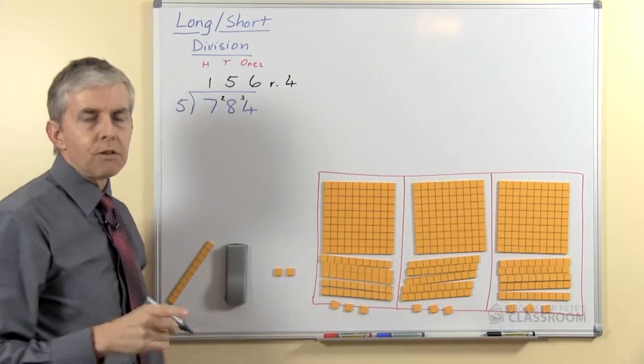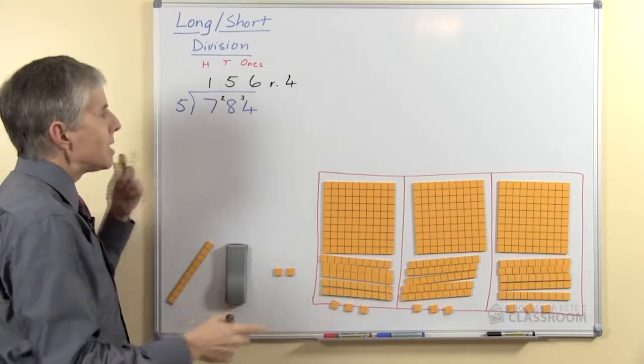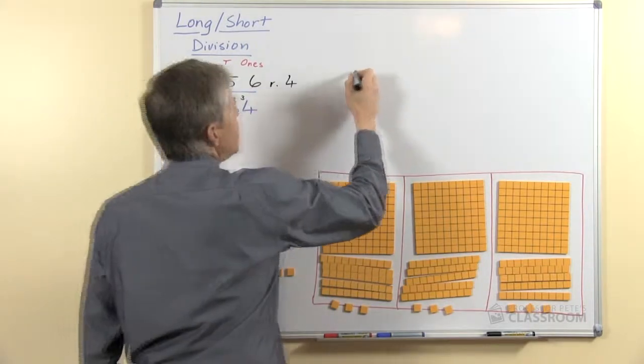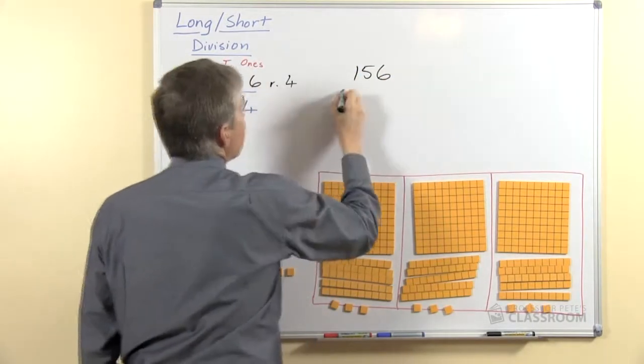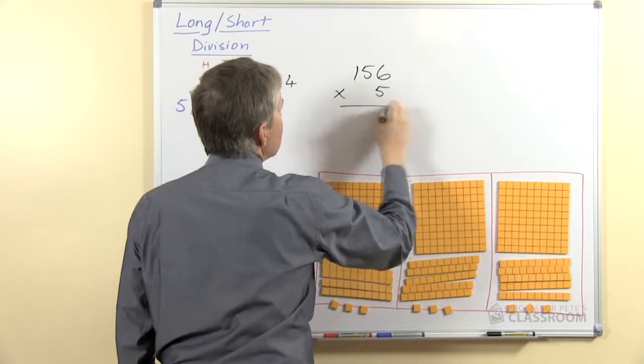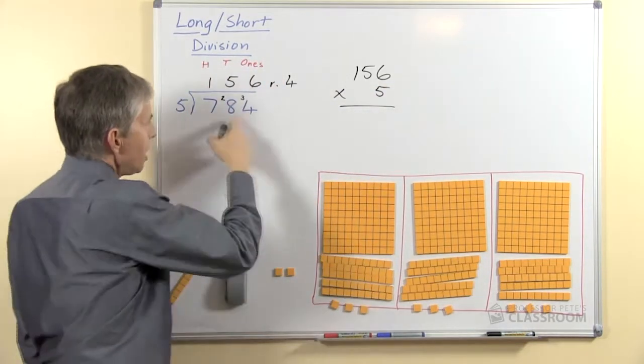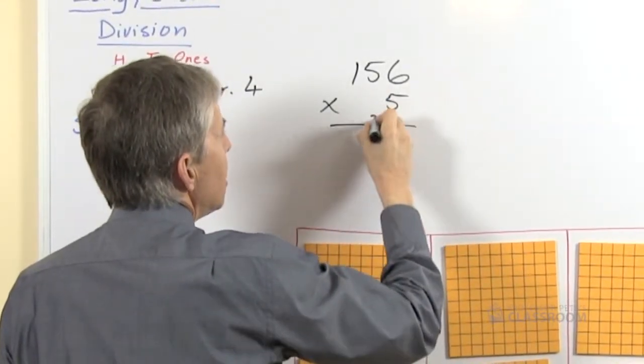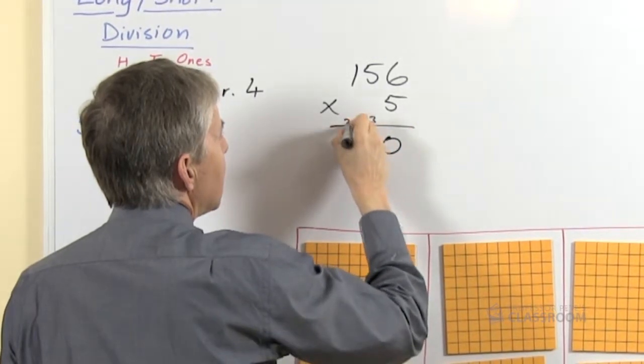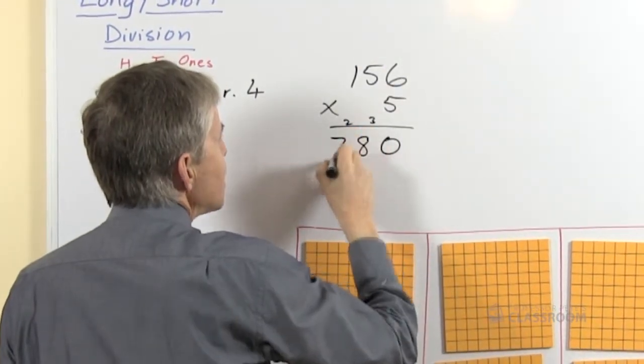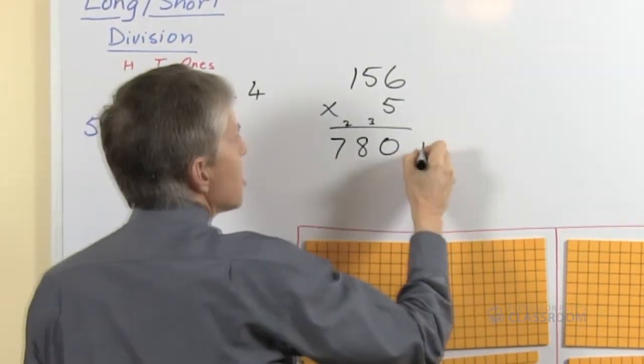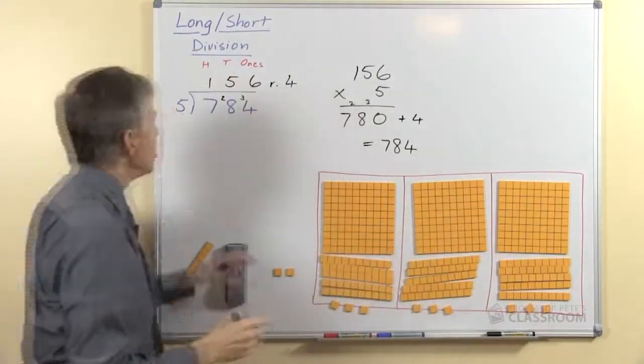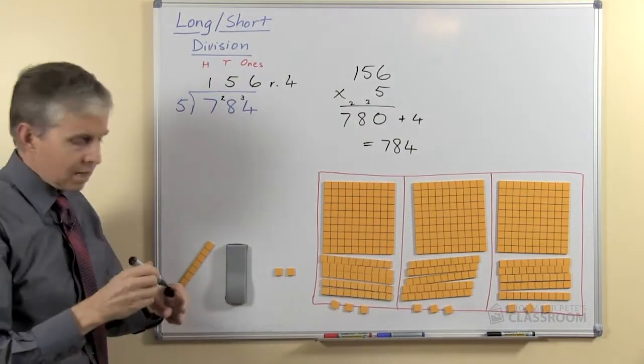One last step I'll show you which can be very useful when you're doing this is to reverse the process to check your answer. So 156 times 5 will equal how much? If we're correct it'll be almost the same as this, I'll show you what I mean in a moment. So we do 5 sixes are 30, 5 fives are 25 and 3 is 28, 5 ones are 5 and 2 is 7. The last thing we have is a remainder of 4 so we'll add 4 and we get the answer 784 which is the same as the number that we started with.